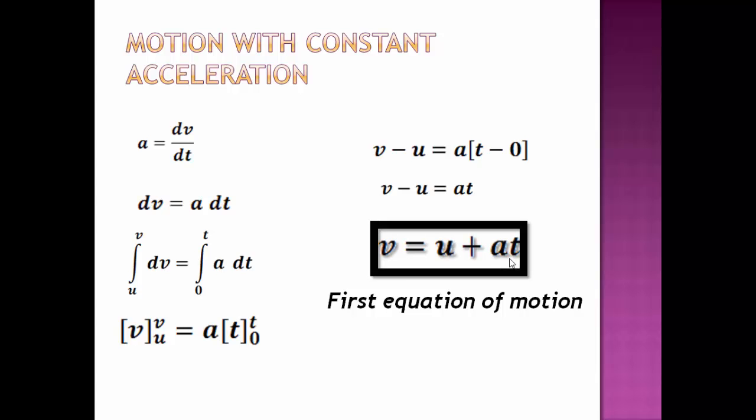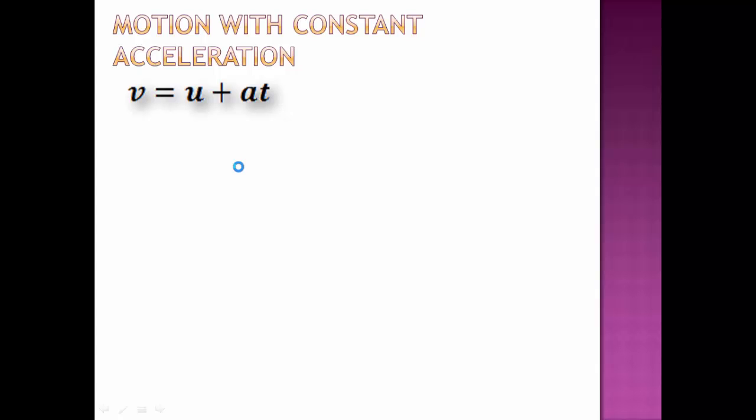This is the first equation of motion. To derive the second equation of motion we start with the first equation of motion v equals to u plus a t. Now by definition of velocity we can write it is the rate of change of position. So that will be dx by dt right side as it is. Again separating the variables dx on the left side u plus a t with respect to dt on the right side.